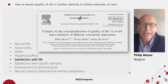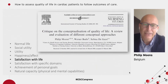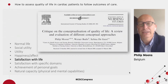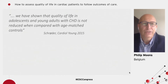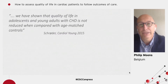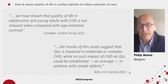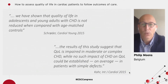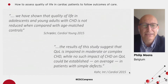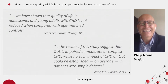Some of you may know that I'm mainly working in congenital heart disease. Interestingly, in 2015, two review articles were published on quality of life in congenital heart disease. One review article found that quality of life in adolescents and young adults with congenital heart disease is not reduced when compared with age-matched controls. Another review article published in the same year concluded that quality of life is impaired in moderate or complex congenital heart disease, while no such impact could be established in simple defects. These are clearly conflicting findings — and the question is, how comes?